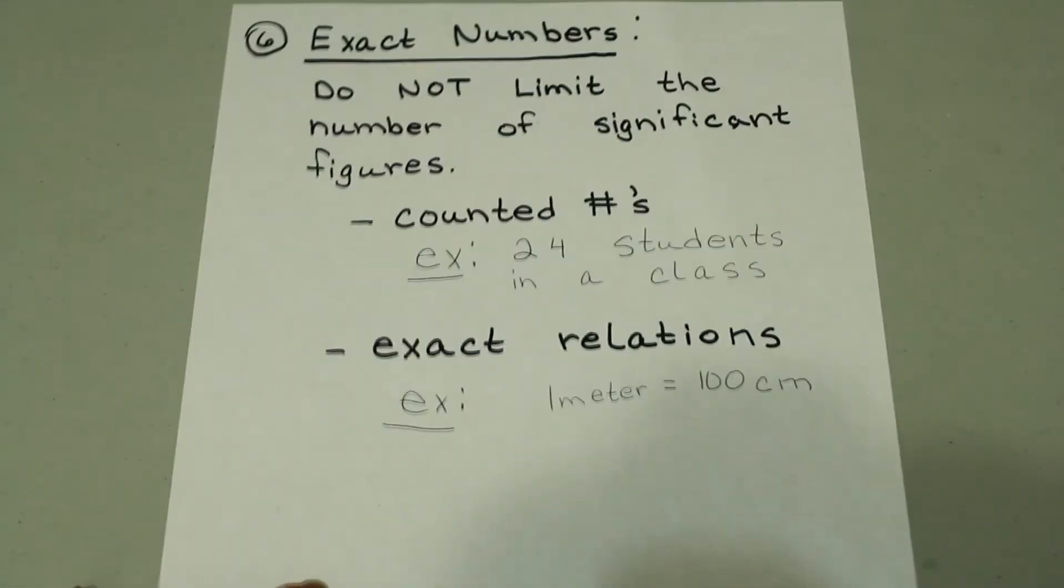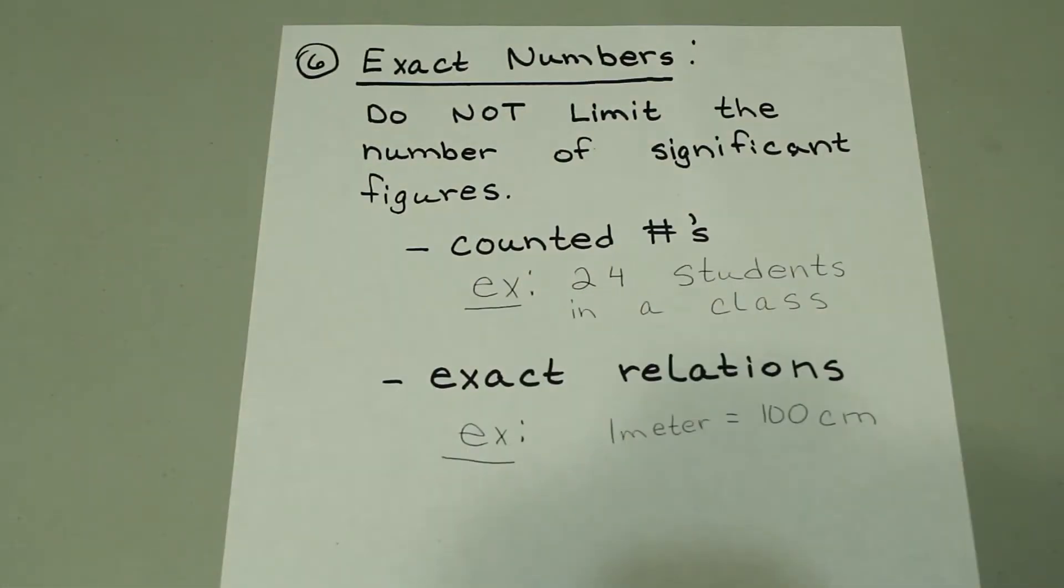And the last thing that I want to talk about are exact numbers. In exact numbers, we don't limit the number of significant figures. An exact number can have an infinite number of significant figures. So in this case, you don't have to worry about significant figures. And exact numbers are counted numbers. For example, if I said there are 24 students in this class, we can say with certainty that there are 24 students, we can count and make sure there's no approximation, no estimate. It's an exact number. We don't have half of a student, which would be kind of scary. So we know there are exactly 24 students.